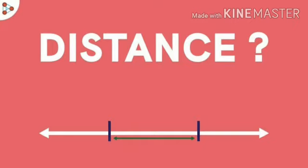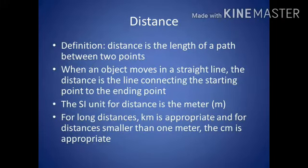So distance is nothing but the total path length covered by an object or a person from the particular point to another point. So here I am going to give you the definition of distance. Distance is the length of a path between two points.